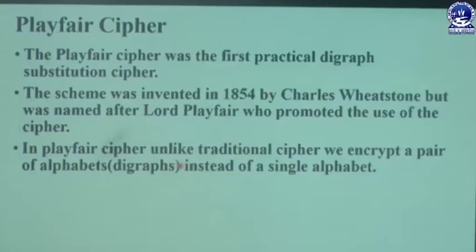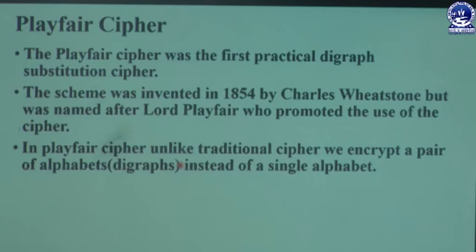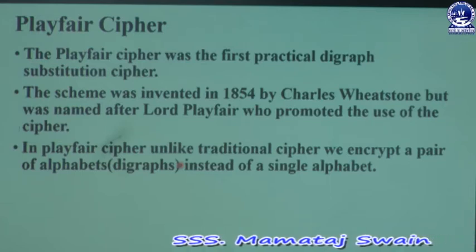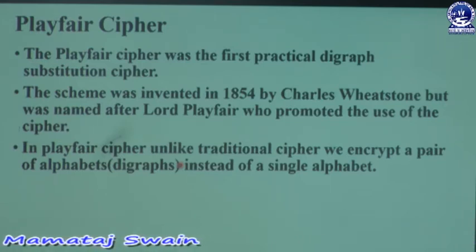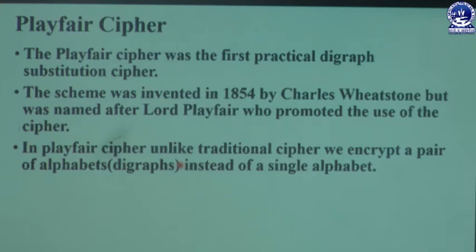Basically, Playfair cipher and Vigenère cipher are poly-alphabetic ciphers. The Playfair cipher is one of the substitution ciphers, or you can say it is a practical digraph cipher, which means pairs of letters are encrypted. In other ciphers, only a single letter is encrypted. This Playfair cipher was invented in 1854 by Charles Wheatstone, but it is named after Lord Playfair because he prompted its use. In Playfair cipher, we use a 5×5 matrix.